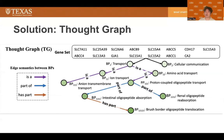On the top, BP1-Transport and BP2-Cell Communications are very general processes that encompass a large set of activities. And as you move down the hierarchy, for example, BP1-2 and BP1-1, the processes become more specific.